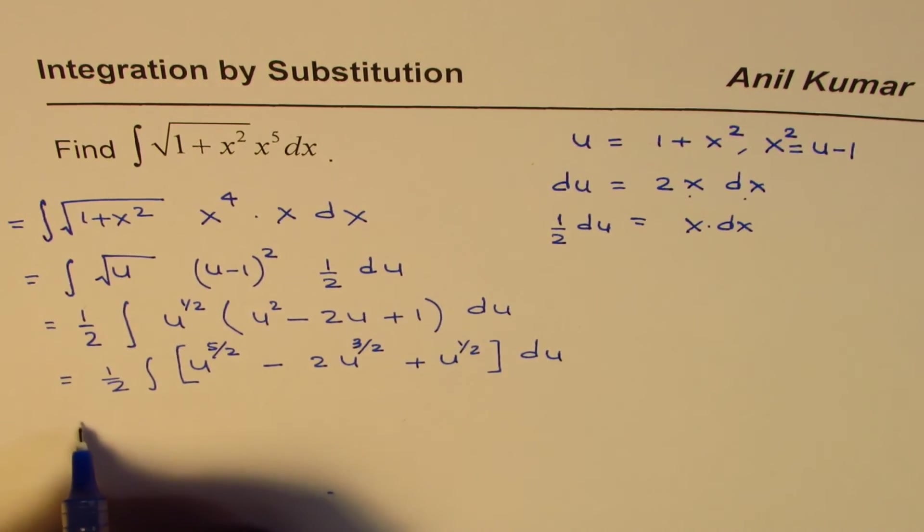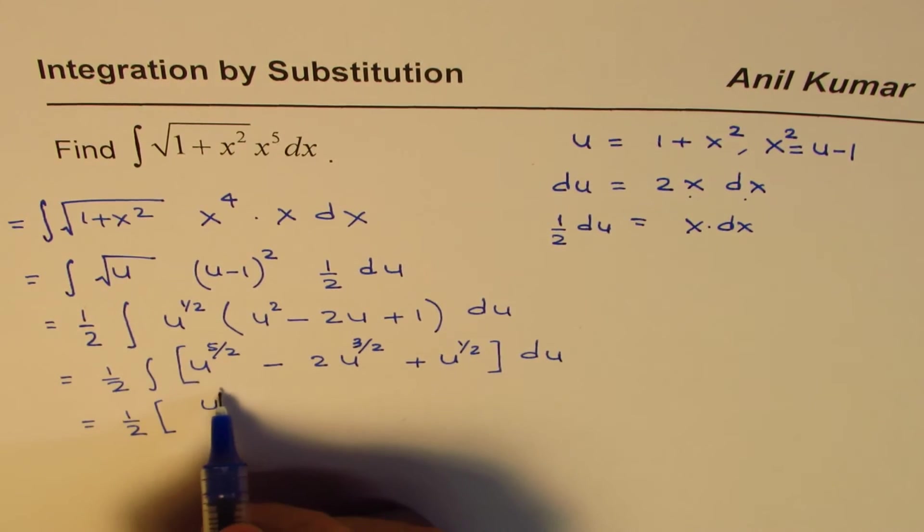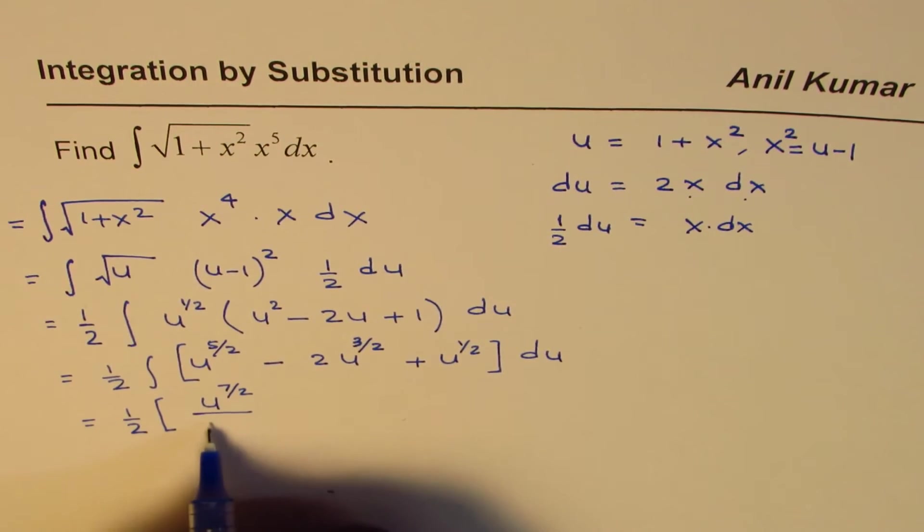Now integral of this is half, and let's put the bracket here: u to the power of, add 1, so 7/2 over 7/2.